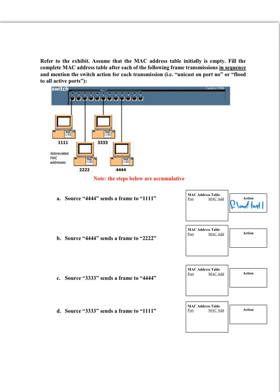From Event 1 the switch learns that MAC address 4:4:4:4 is connected to port 9, because that is where the frame is coming from. However, there is no entry for destination 1:1:1:1 in the MAC table, so the switch floods. The entry learned is: 4:4:4:4 → port 9.